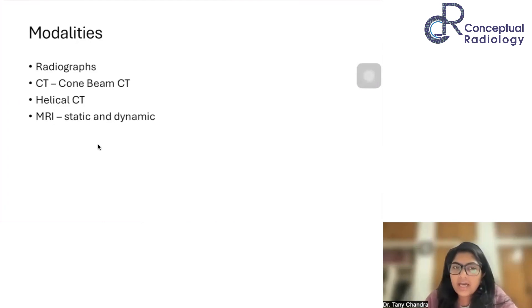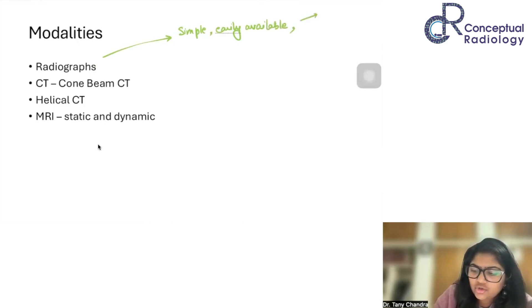What are the different modalities for which we can use to see a TMJ? First of all is your radiographs. What is the advantage of radiographs? They are simple to do. They are readily available. What can they show us? They can show us the bony outlines. We will see each of them in detail again. And next is that they have an advantage of being dynamic.